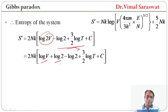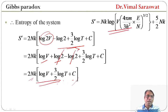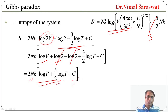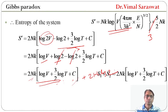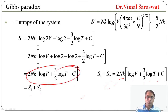Using this corrected formula, the entropy of the system becomes S = 2NK[log V + (3/2)log T + C], and the log 2 terms cancel out. So S = S1 + S2 exactly, with no additional 2NK·log 2 term, meaning the entropy of the system is exactly the same as S1 + S2.